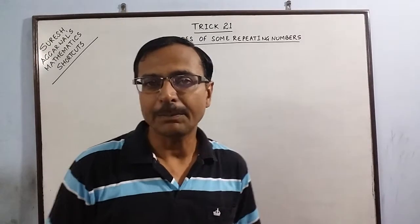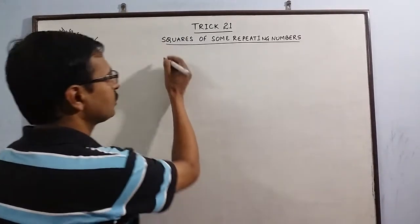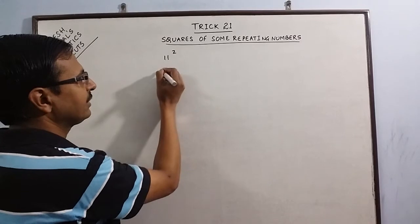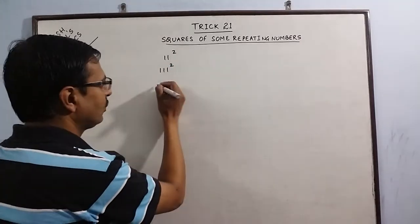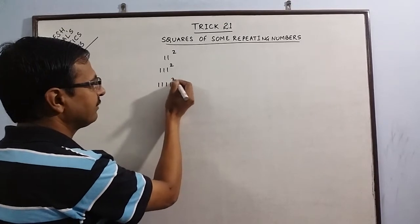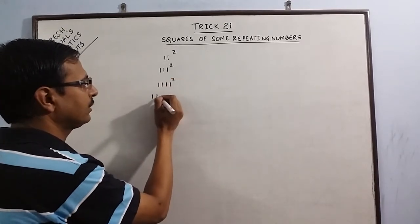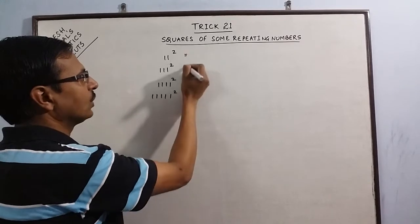I am taking the example of 1s first. Suppose we have to square 11, 111, 1111, 111111 square and so on.